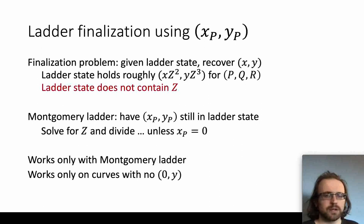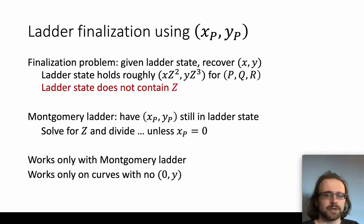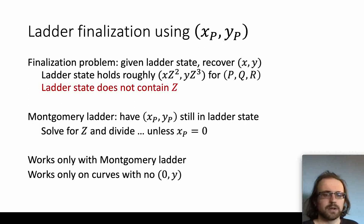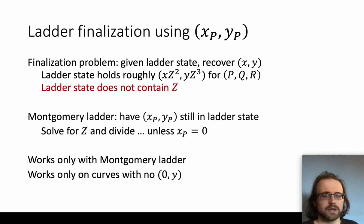A second interesting question is how to finalize the ladder — given the ladder state representing x/z squared and y/z cubed for the three points, how do we recover x and y? We divide through by z, but the ladder state doesn't contain z, so we need to solve for it. If we're doing the Montgomery ladder, then P in the ladder is the same as the base point. If we've stored the initial point, we have both that and its coordinates scaled by z squared and z cubed — from this it's easy to solve for 1/z and clear the denominators. This technique fails if the original point had x coordinate zero, so it works on the Montgomery ladder only on curves where xP equals zero is impossible.